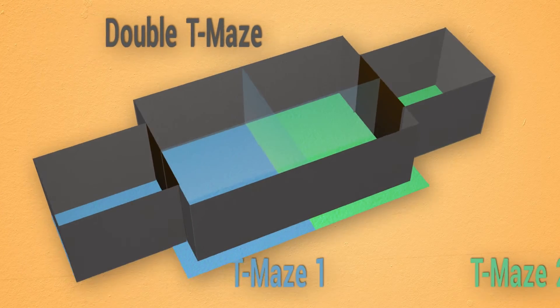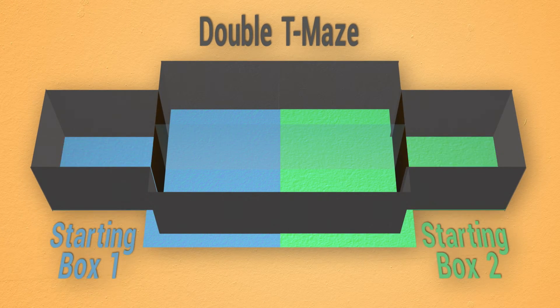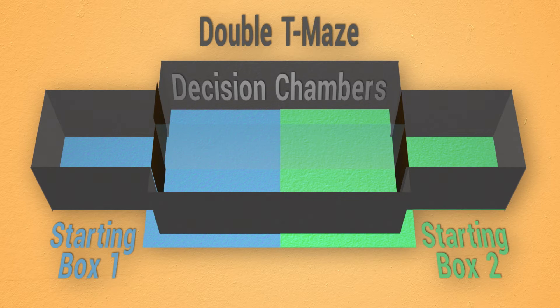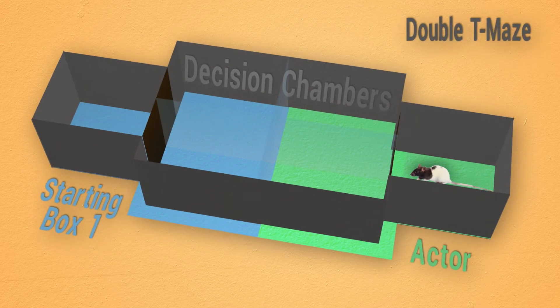Each T-maze consisted of a starting box connected to two decision chambers by two independently operated doors, each leading to a choice compartment. In this task, we trained an actor and a partner rat where the actor decided between two alternatives only differing in the reward delivered to the partner.